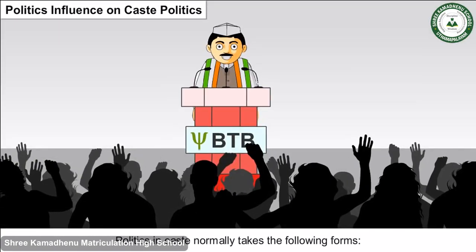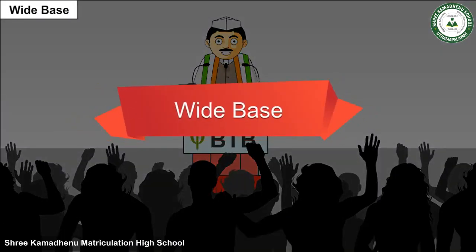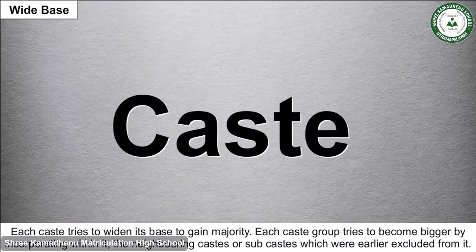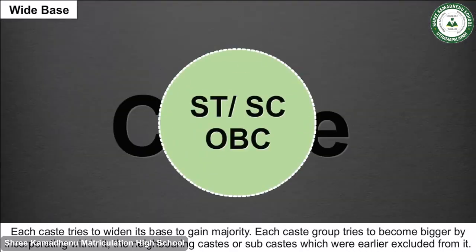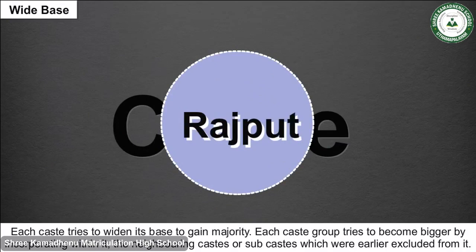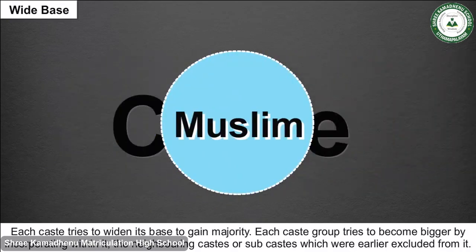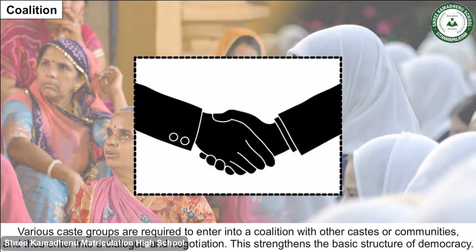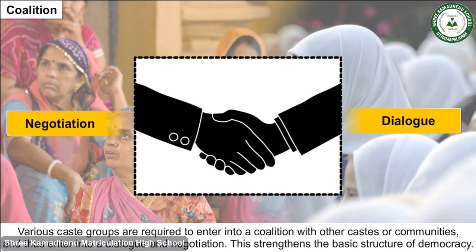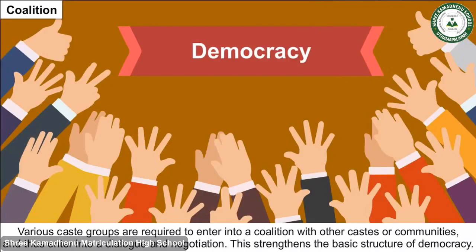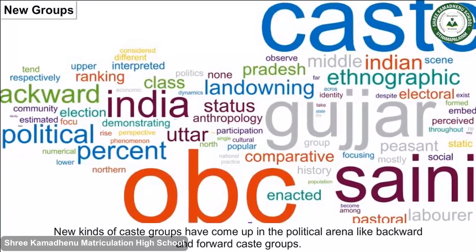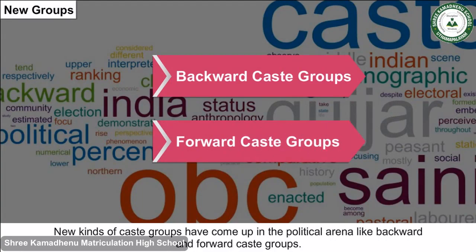The interaction between politics and caste normally takes the following forms: First, widening the base — each caste tries to widen its base to gain majority. Second, coalition — various caste groups enter into coalitions with other castes or communities through dialogue and negotiation, which strengthens the basic structure of democracy. Third, new groups — new kinds of caste groups, like backward and forward caste groups, have emerged in the political arena.